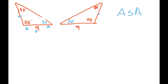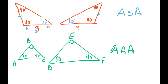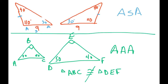Now let's look at the two cases that don't work. The first is Angle-Angle-Angle (AAA). If you have a triangle with 50 degrees and 40 degrees, and another triangle with the same angles, you can actually make any size of triangle with those same three angles. So triangle ABC is not congruent — you're just scaling one triangle up compared to the other. AAA never works.